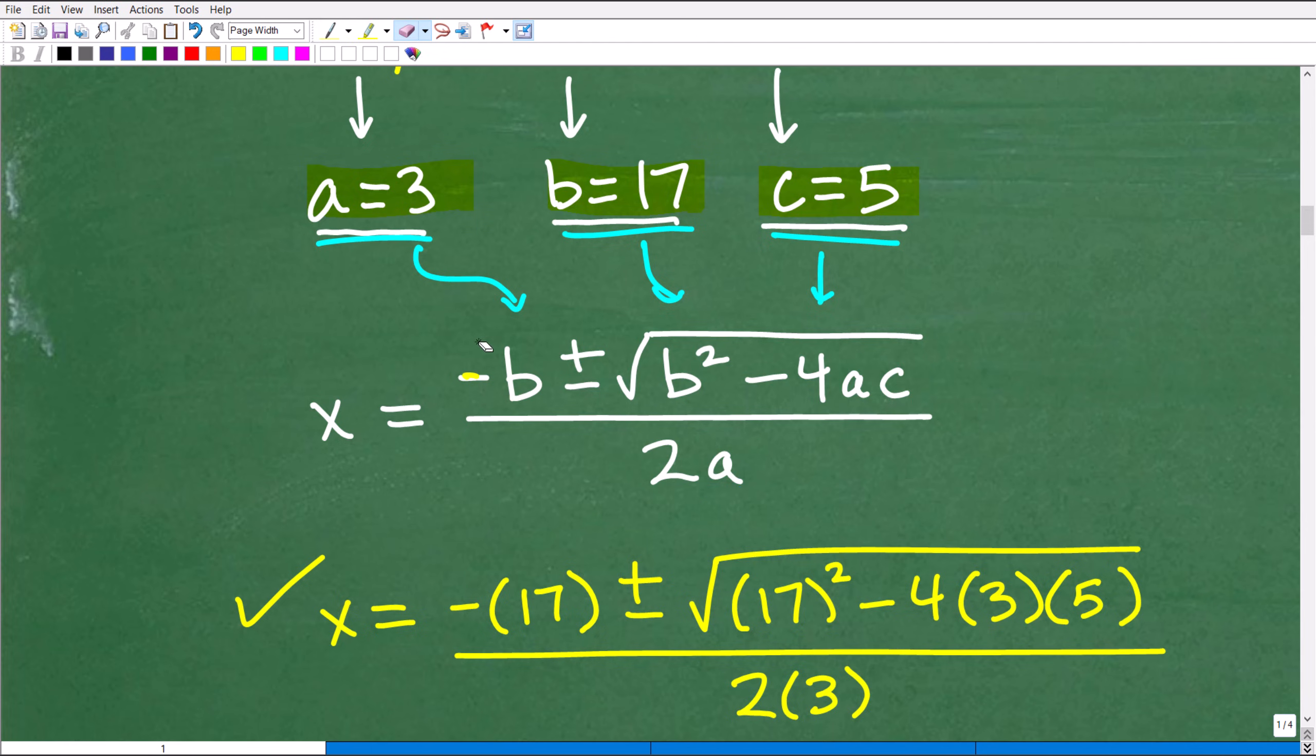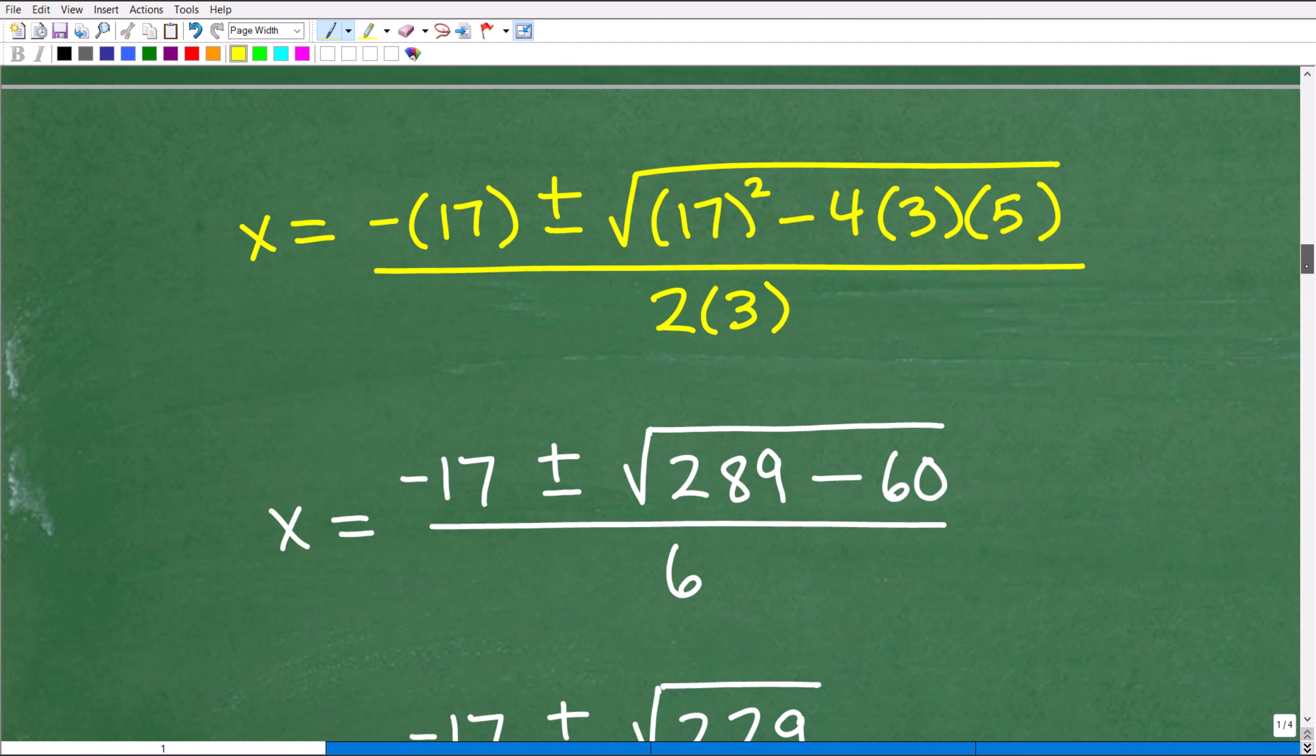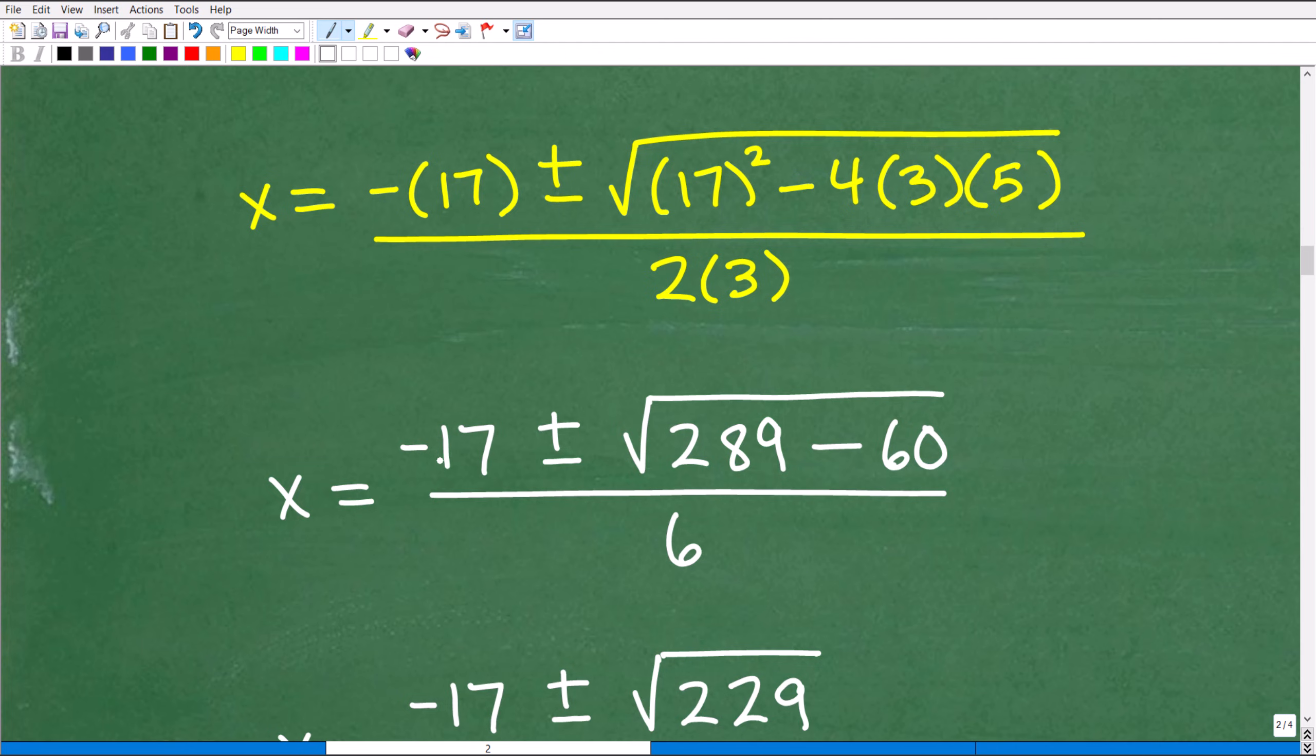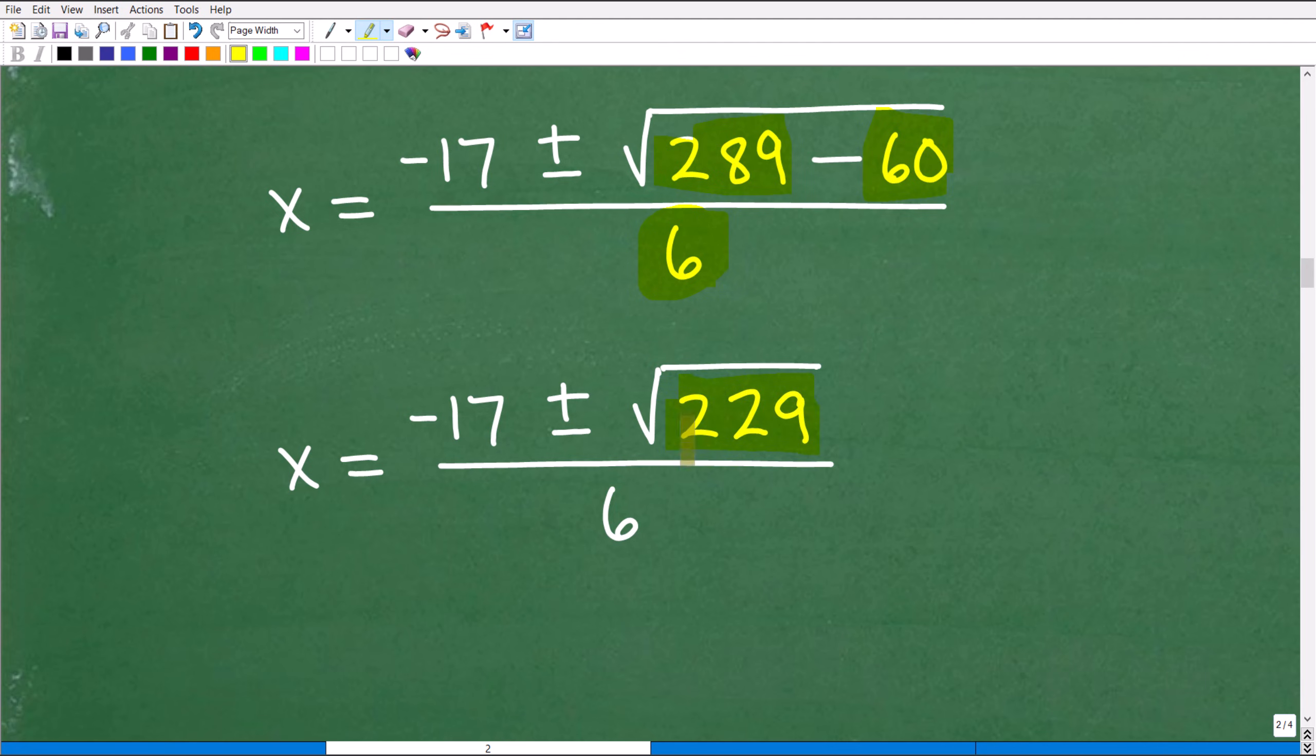So we have minus 17 plus or minus b squared, which of course is 17 squared, minus four times a, which is three, times c, which is five, all over, of course I'm going to be taking a square root of that, all over two times a, which is two times three. So now we have to go ahead and tackle all the number crunching here and feel free to use a calculator to help you out. So here we have minus 17, which is going to be negative 17 plus or minus 17 squared right here is 289. And then we have four times three times five. And you're just looking at this, this will be 60, right? Five times four is 20, 20 times three is 60. So that's 60. And then of course, two times three down here is going to be six. So let's go ahead and subtract 60 from 289. We get 229 right there. And we have minus 17 plus or minus square root of 229 over six.